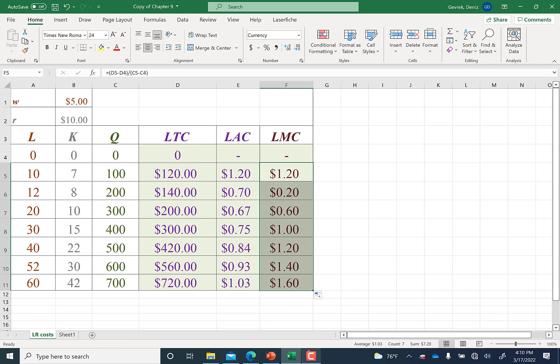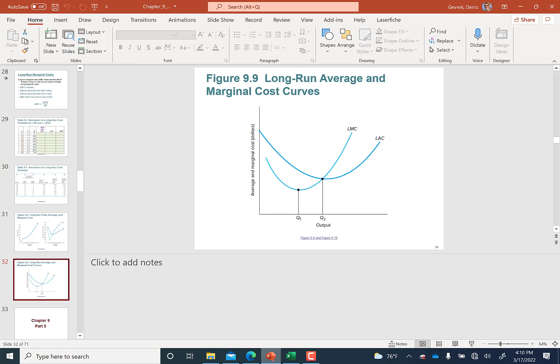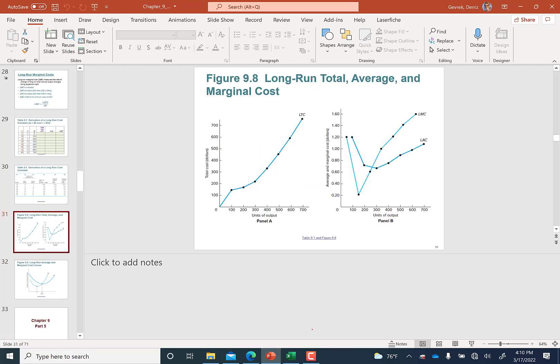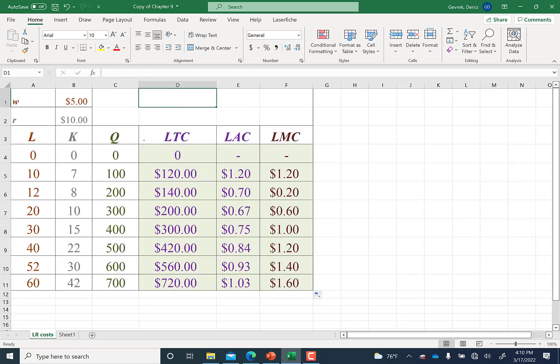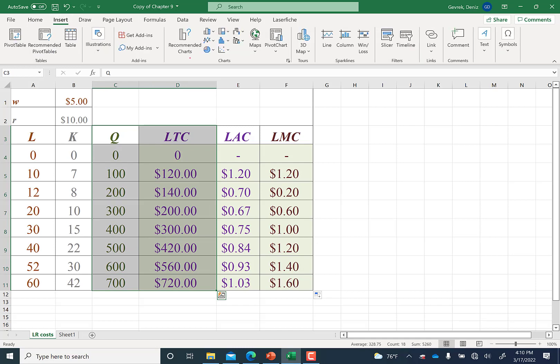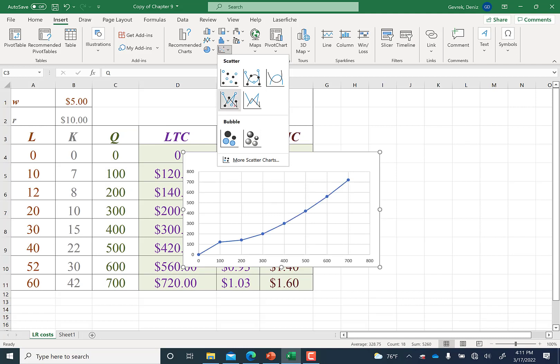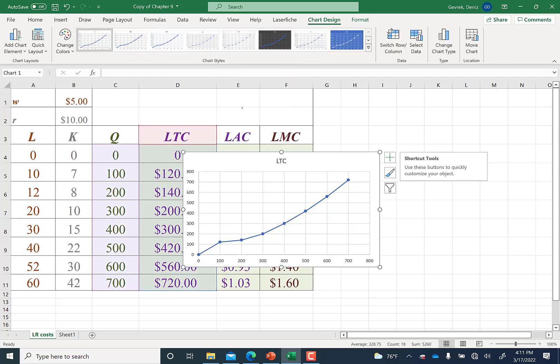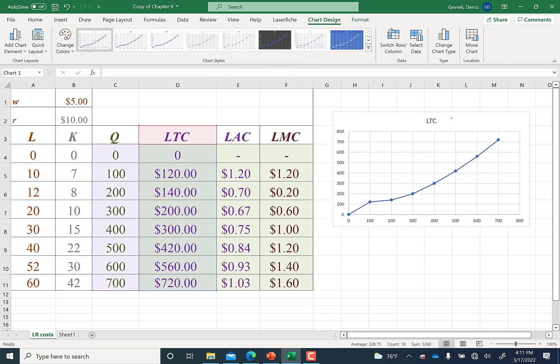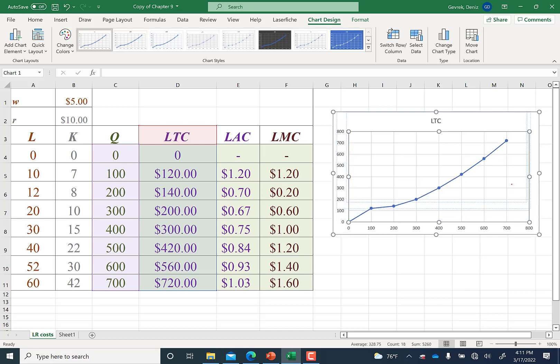How can we graph these and get these pretty graphs? It's very easy. Everything is against quantity. I'm going to grab quantity and LTC, go to Insert, go to the charts area. In the charts area, you can grab this one or whichever you prefer. This one is more curve, this is stronger lines. So there's the long-run total cost curve.